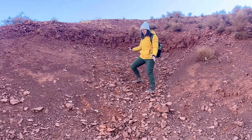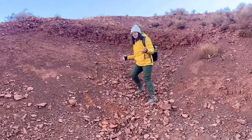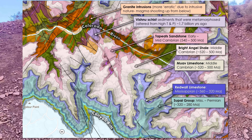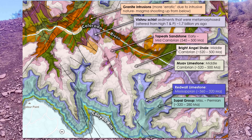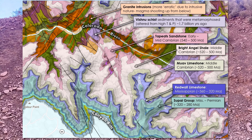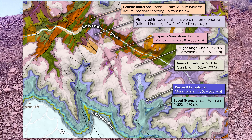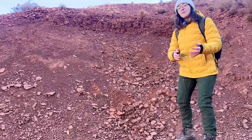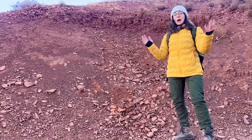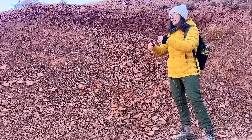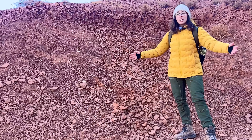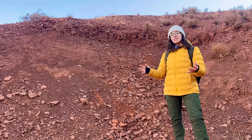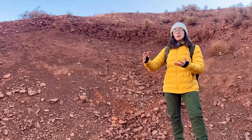Then we get to the Supai Group, which has beautiful red siltstones, sandstones, and shales, and some minor limestone, deposited in the upper Mississippian to the lower Permian, from around 320 to 285 million years ago. These rocks represent a period of fluctuating sea level, so they represent a variety of environments — from fluvial river environments, to deltaic delta environments, and other shallow marine depositional environments — reflecting the fluctuating sea levels of the Mississippian, Pennsylvanian, and Permian.